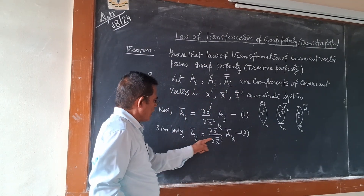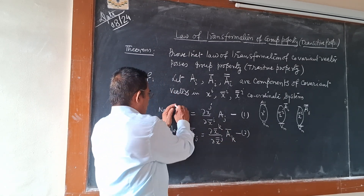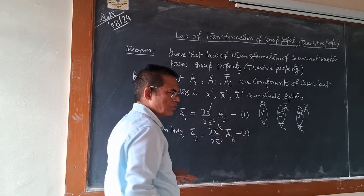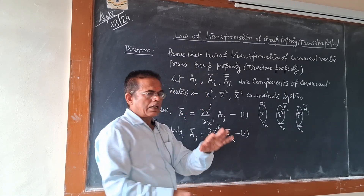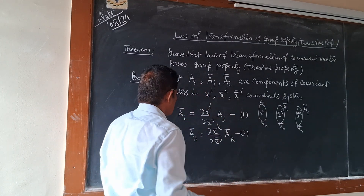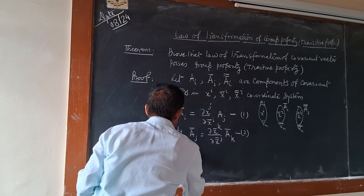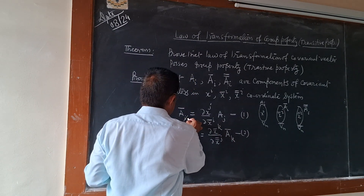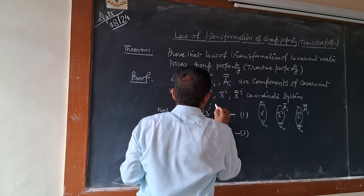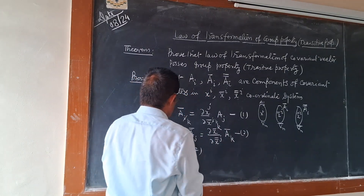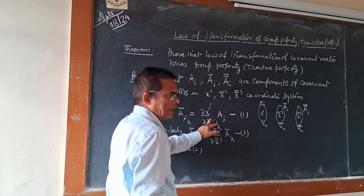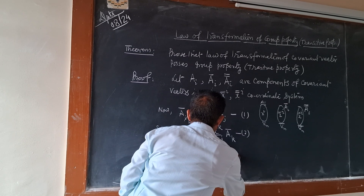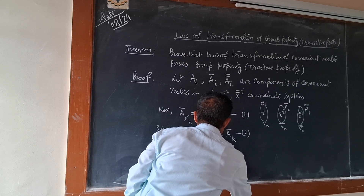अब equation one और two से, यहाँ पर Ā_k की value रख देंगे. From one and two: A̿_j = (∂x̄^k / ∂x̿^j) · Ā_k. अब Ā_k को equation one से substitute करेंगे. Equation one में A̿_i = (∂x^j / ∂x̄^i) · A_j लिखा था, चूँकि i dummy है, i के स्थान में k लिख देंगे दोनों जगह. तो del x̄^k को expand करेंगे.